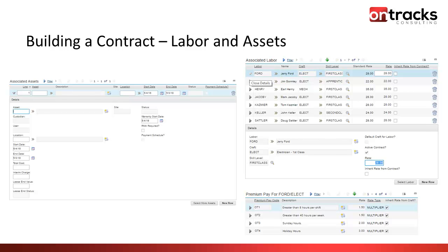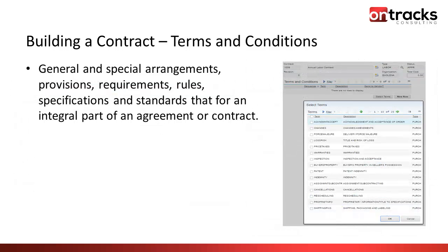The final piece around contracts is terms and conditions. These are a library of arrangements, provisions, and rules you've agreed to with your vendor. As a company, you may have a standard library of terms and conditions — for example, your default position on warranties. Your legal team has agreed to a specific clause, and you can select and associate it to a contract. If during contract review you've identified special exceptions or need to remove clauses, you can edit those terms and conditions. Once the contract is saved and approved, that forms the agreement in place with that particular vendor.